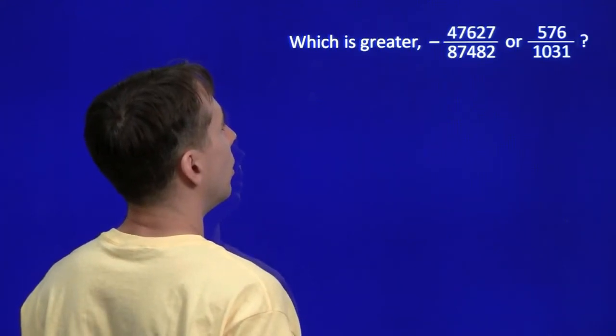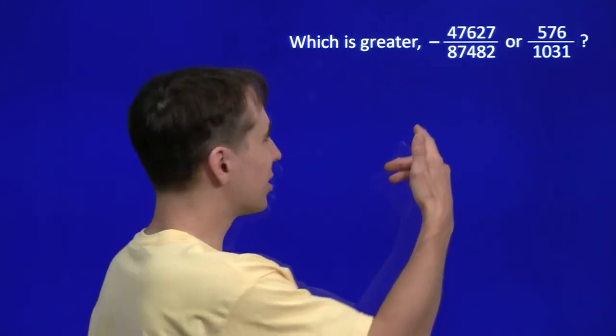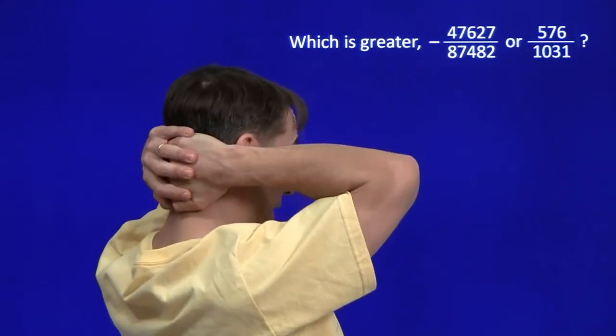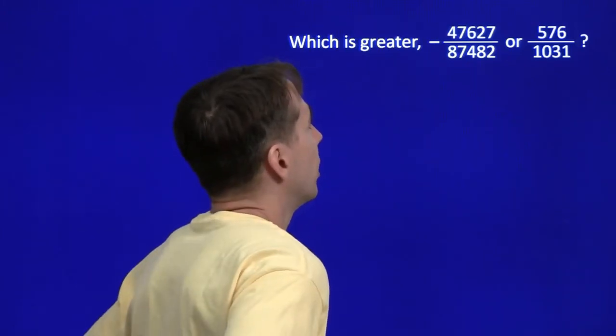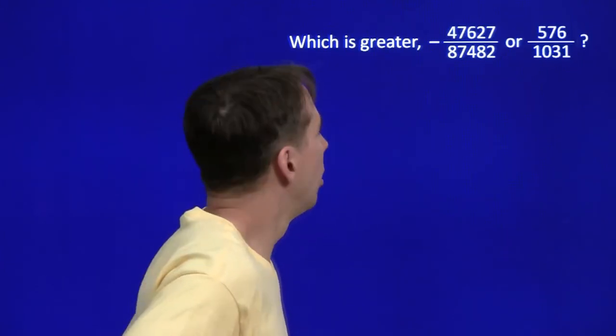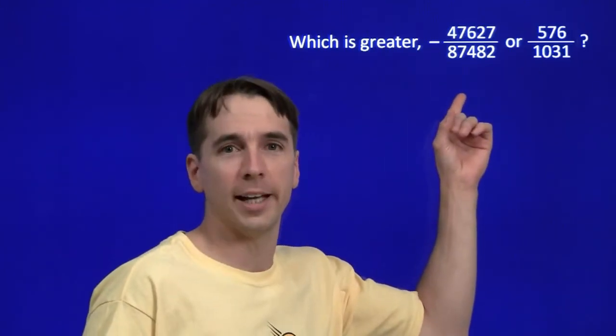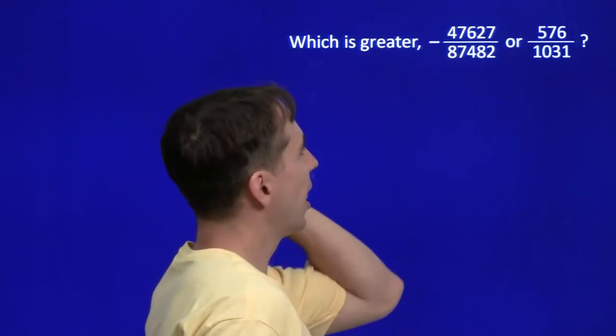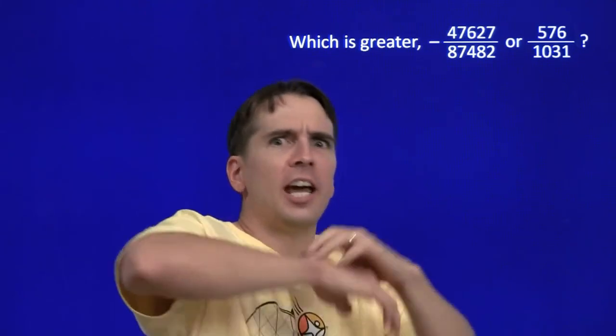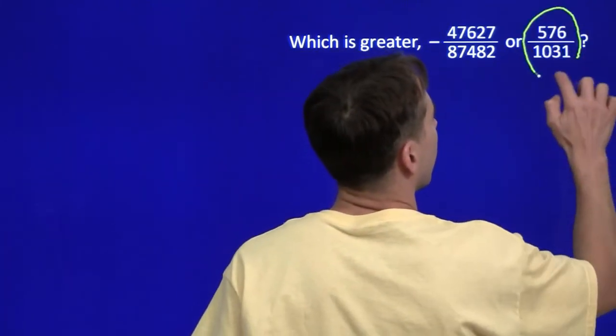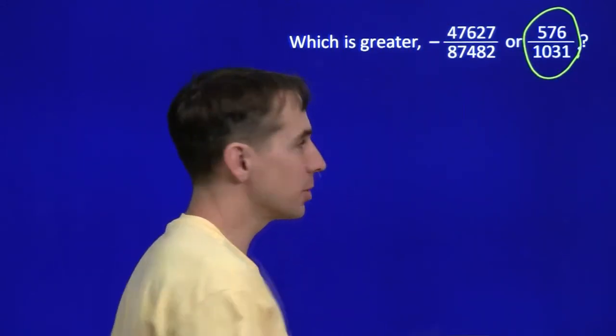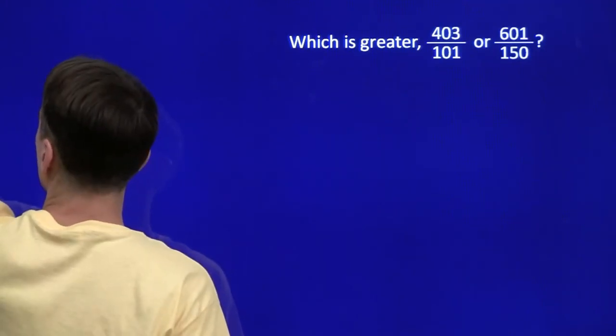A common denominator is the product of 87,482 and 1,031. Oh, no, I'm not going to do that. It's going to take forever. What do we do? What's that? Negative? You're right! Only one of them's negative. That one's negative. That one's positive. Every positive number is greater than every negative number. And we're done. The positive number is larger than the negative number. Fractions are numbers. Remember that? And some of these problems get very easy.